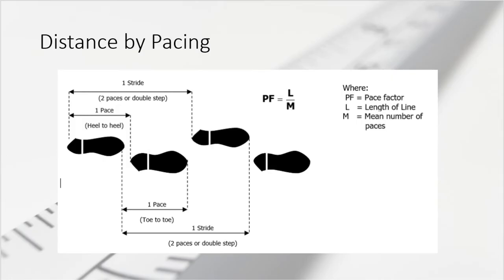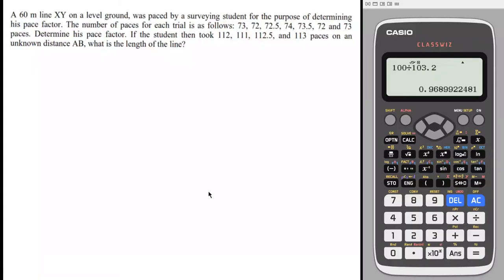Let us solve some problems involving pacing. Problem 1: A 60-meter line XY on level ground was paced by a surveying student for the purpose of determining his pace factor. The number of paces for each trial is as follows: 73, 72, 72.5, 74, 73.5, 72, and 73 paces. Determine his pace factor. Then, if the student took 112, 111, 112.5, and 113 paces on an unknown distance AB, what is the length of line AB?